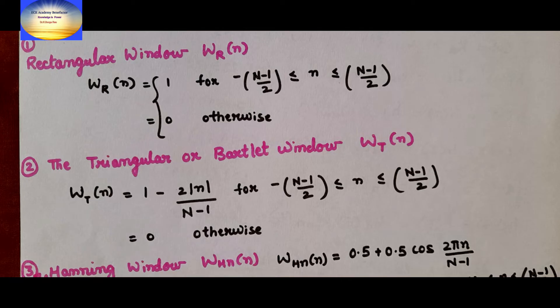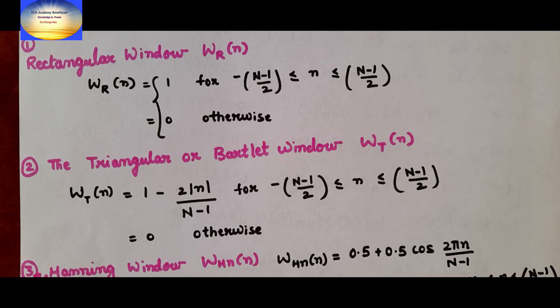In this class I will be giving the definition of four windows: the rectangular window, the triangular or the Bartlett window, the Hanning window, and the Hamming window.